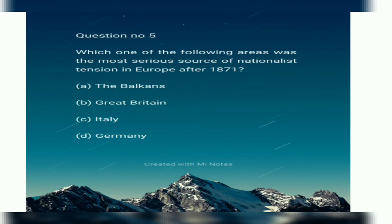Question No. 5. Which of the following areas was the most serious source of nationalist tension in Europe after 1871? Option A: The Balkans. Option B: Great Britain. Option C: Italy. Option D: Germany.